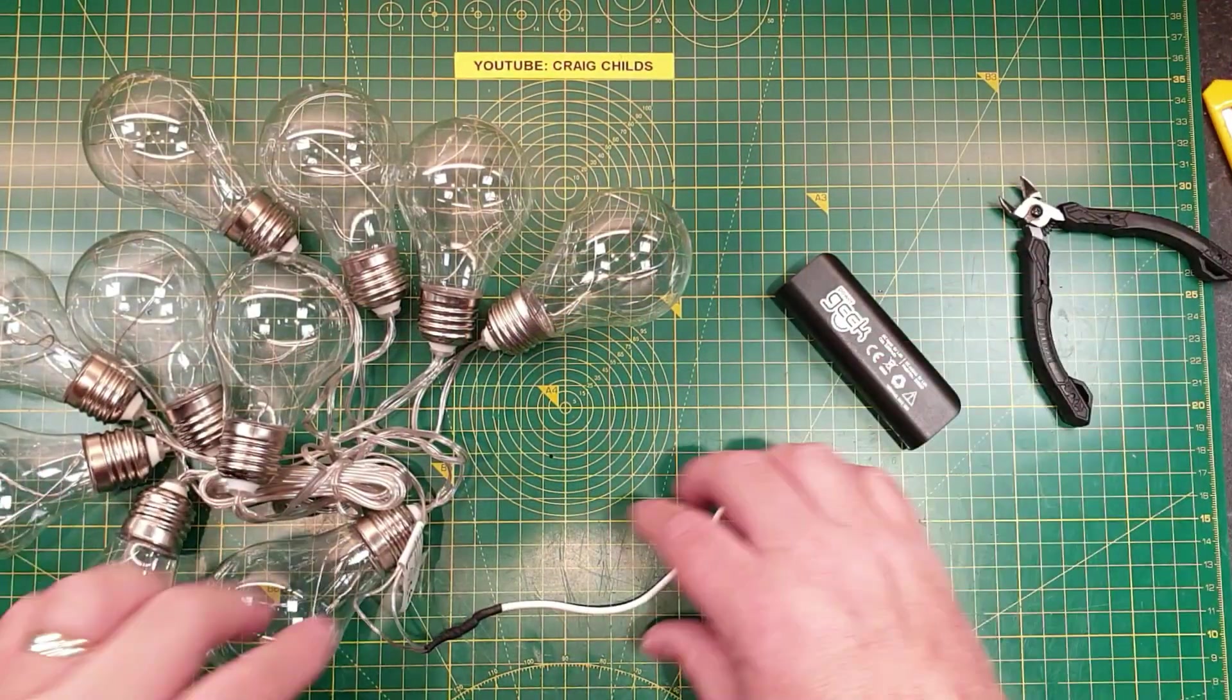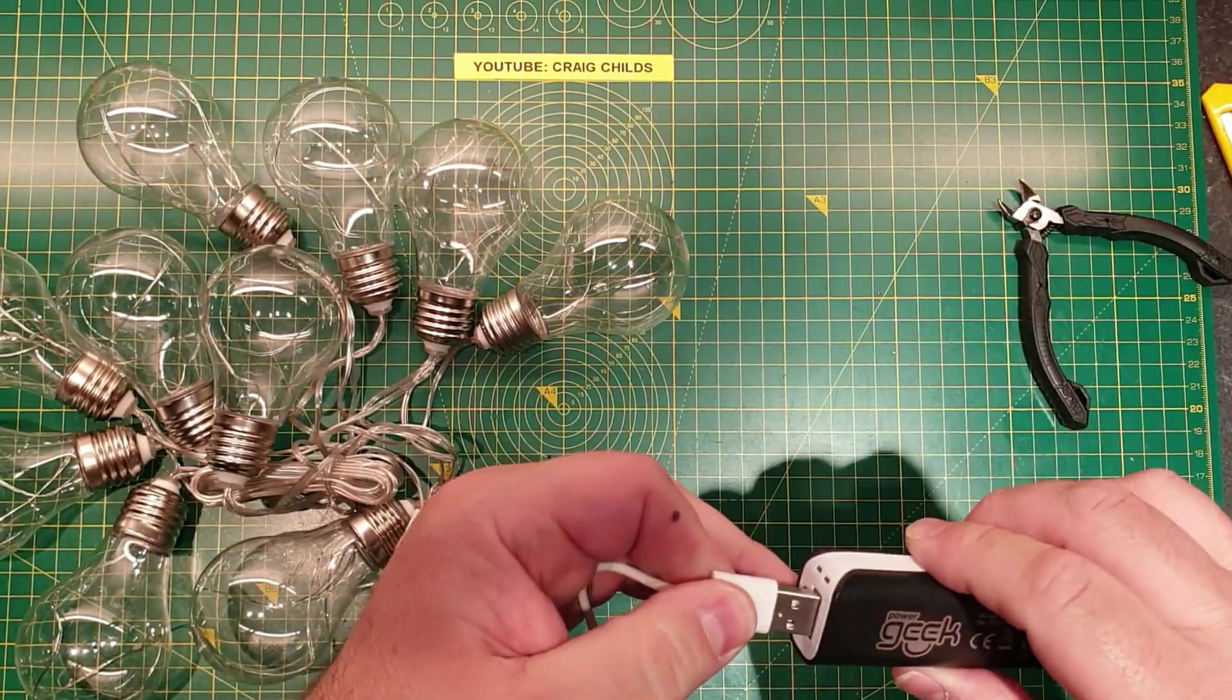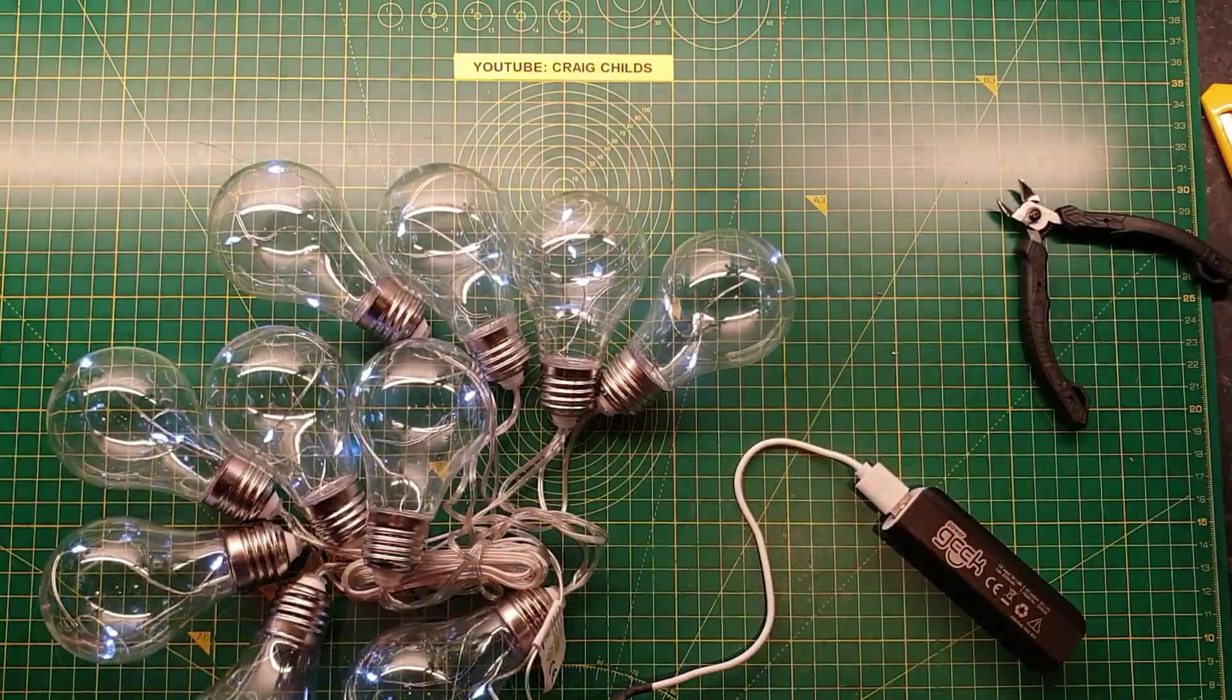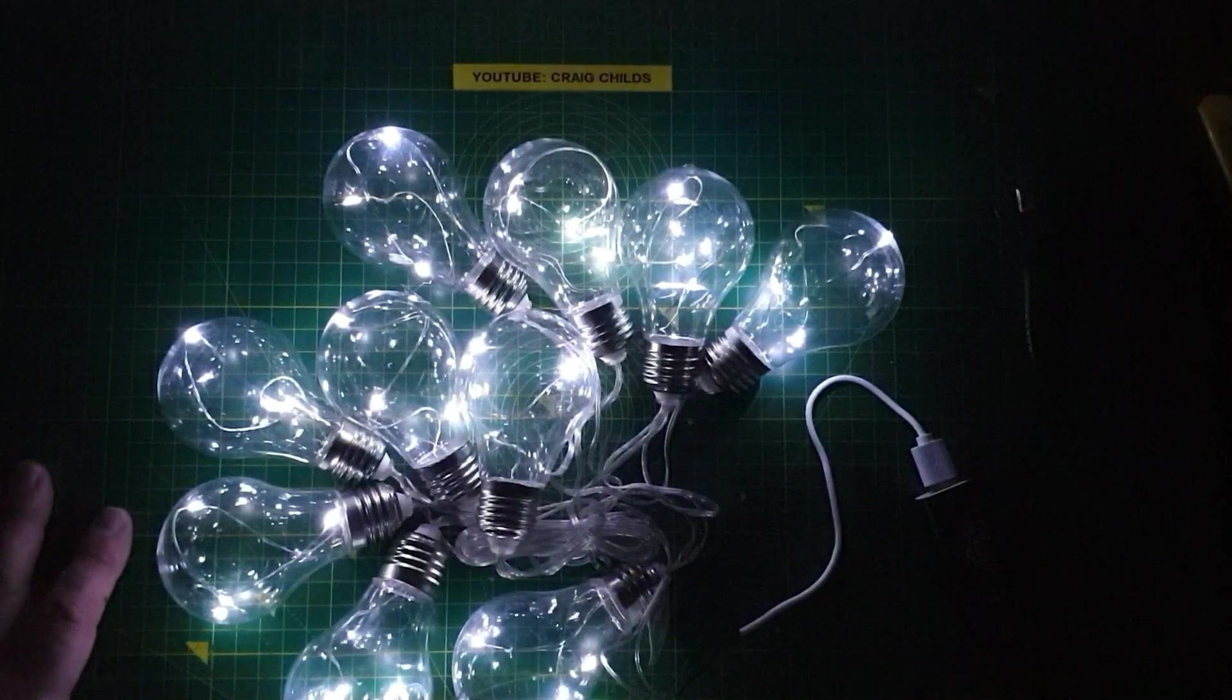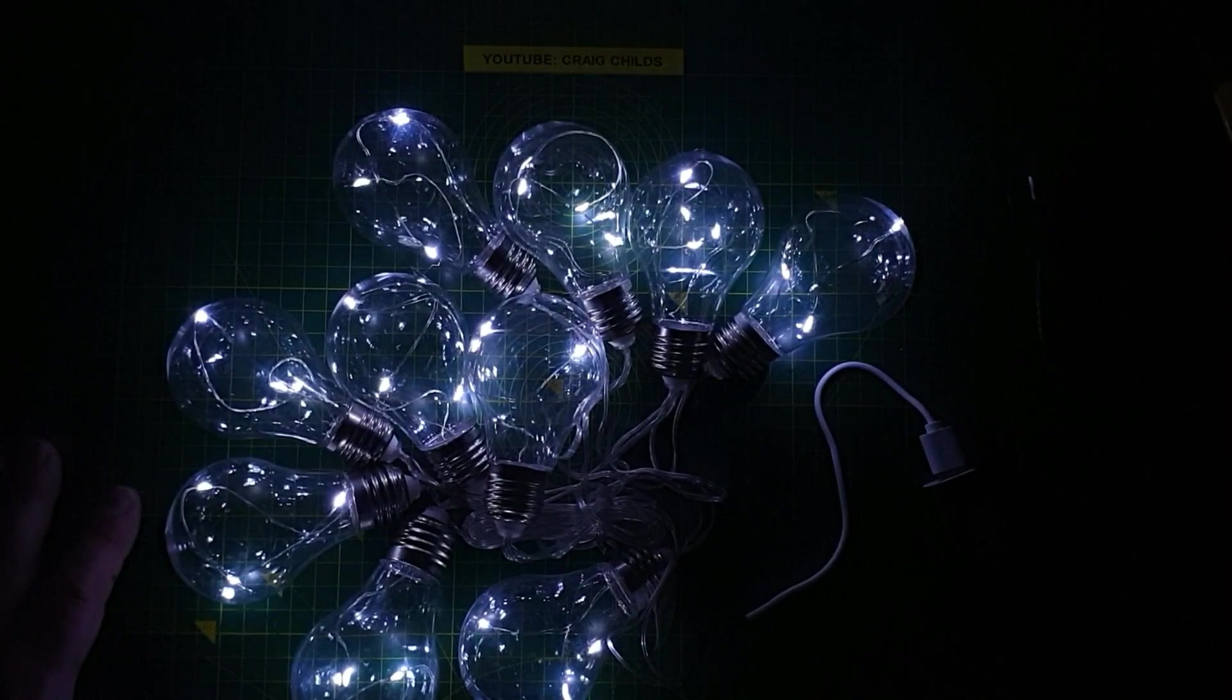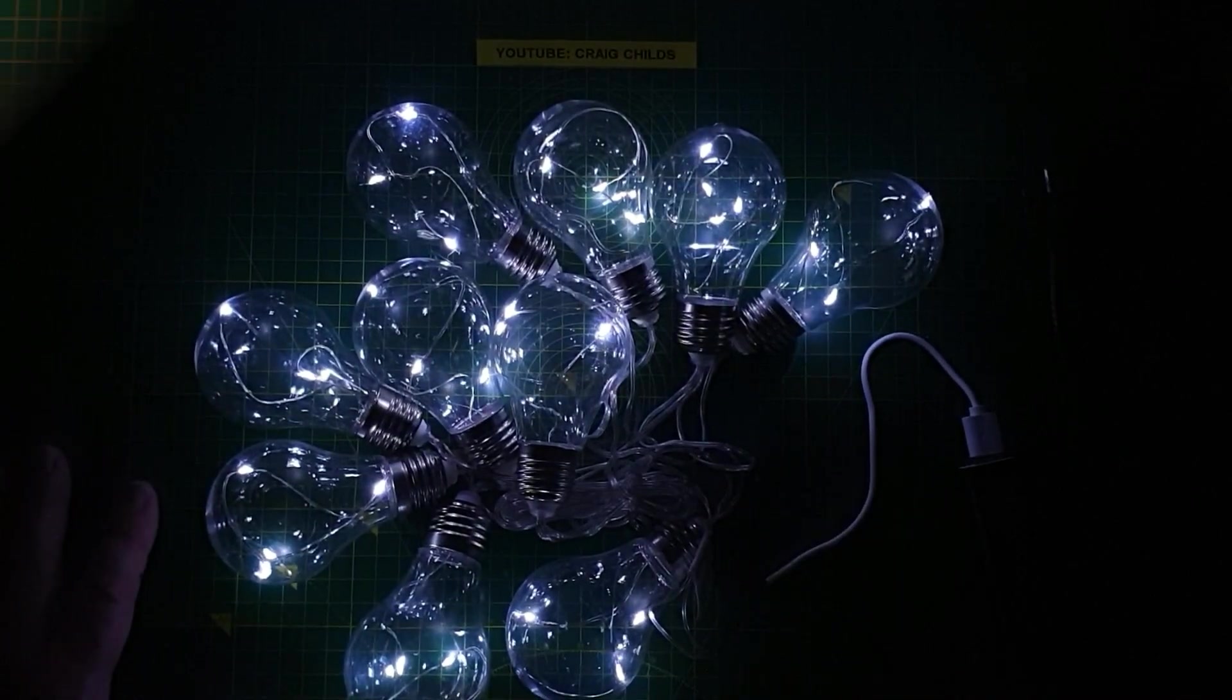Okay, so I've now got my cable soldered up, my heat shrink on it. Let's give it a try, see if it works. There we are. They're nice and bright. They're not quite, let me just take the exposure down a little bit. There we are, that's about how bright they are to the naked eye. So I'm quite pleased with that result.